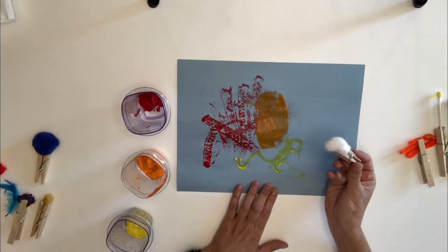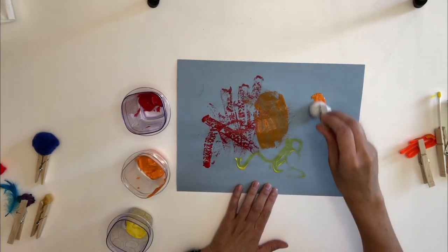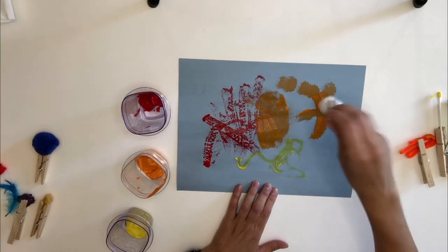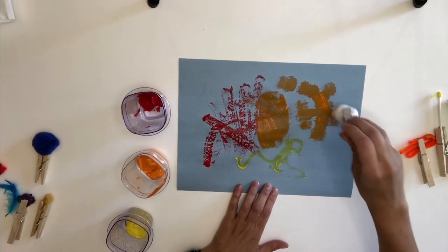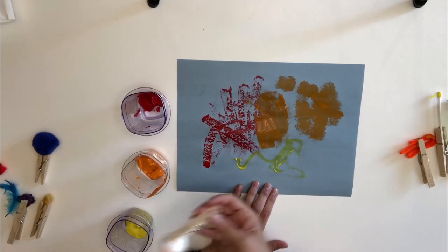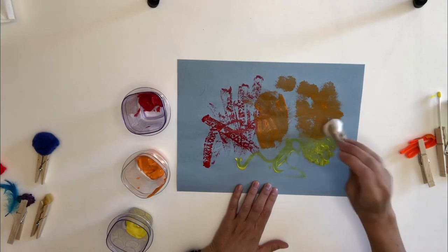Now, I'm gonna try this cotton ball. Let's see what happens with the cotton ball. You know what else I could do with it? Look, I can make it into a dabber. That looks like fun, huh? I'm gonna try another color with that one. That one was fun.